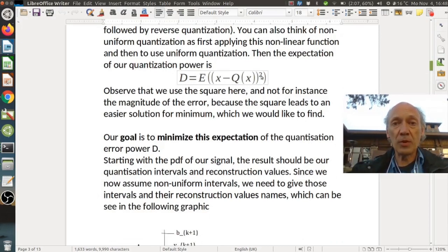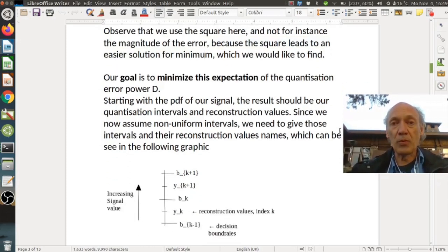Then we take the square to make it always positive. Basically, this becomes a power, and then we average over it. So observe that we use the square here, and not for instance the magnitude of the error, because the square leads to an easier solution for our minimum, which we would like to find. So this is also important to have something that we can easily solve.